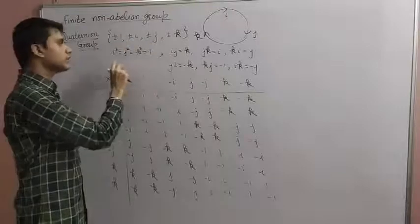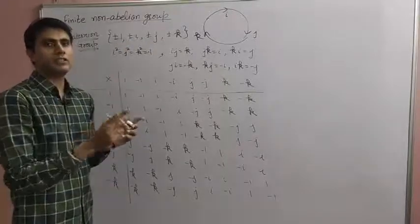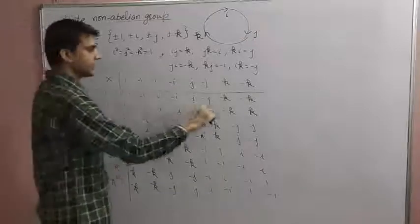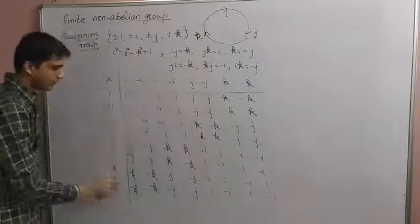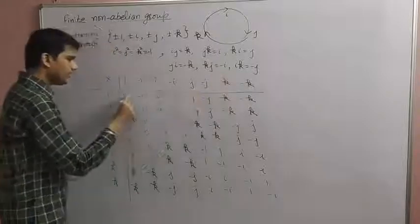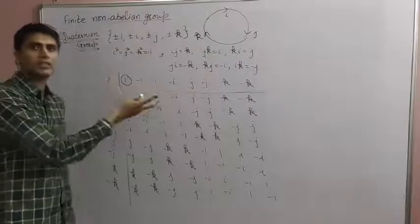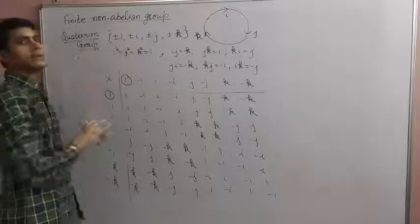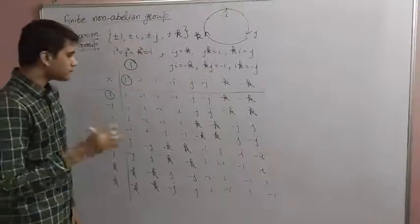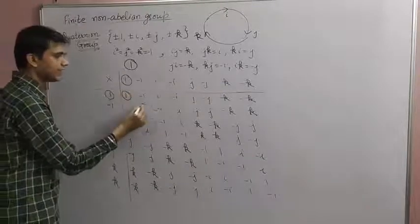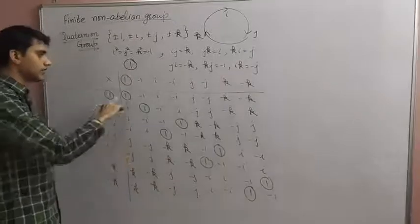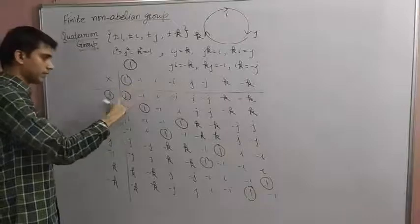A composition table is prepared for this group. Associativity is left as an exercise — verify that for any three elements, changing the parentheses does not change the result. For identity: from the table, the first row and first column match the title row and side column respectively, and the corresponding element is 1. So 1 is the multiplicative identity.